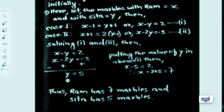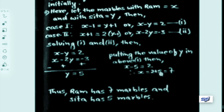Putting y equals 5 in equation 1: x minus 5 equals 2, therefore x equals 2 plus 5 equals 7. So x equals 7 and y equals 5. Since we assumed Ram's marbles as x, Ram possesses 7 marbles. And since Sita's marbles are y, Sita possesses 5 marbles.